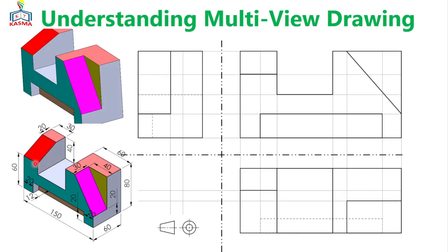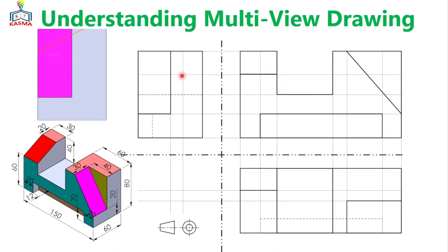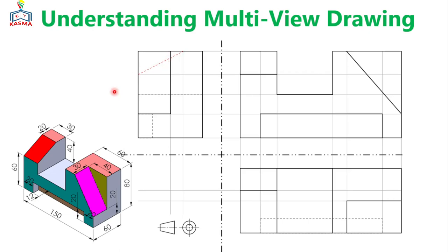For the other measurement it is at 60 mm — previously projected from the horizontal view. So you can connect only this line. Once you do this, this line indicates that the inclined surface is covered with this part. You have to show that there is some surface behind that object. So the multi-view drawings of that part can be easily constructed in this way.